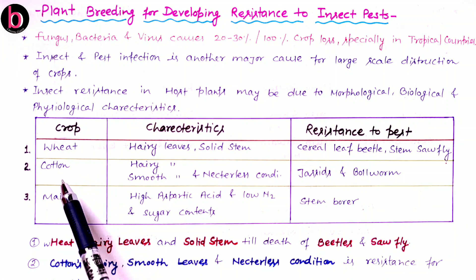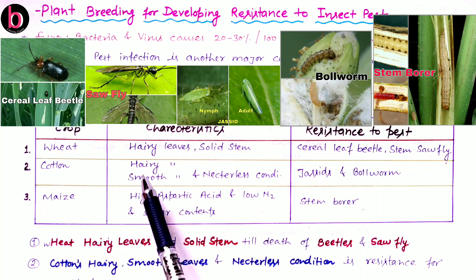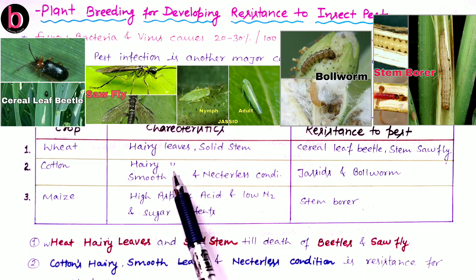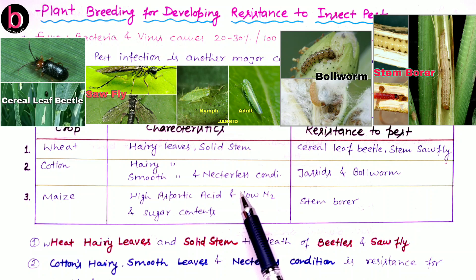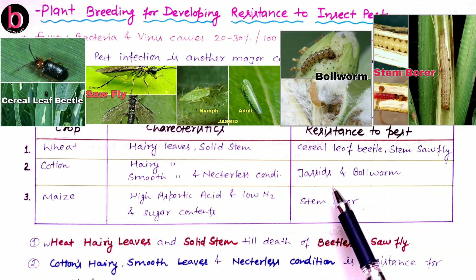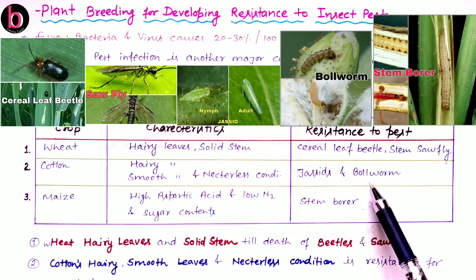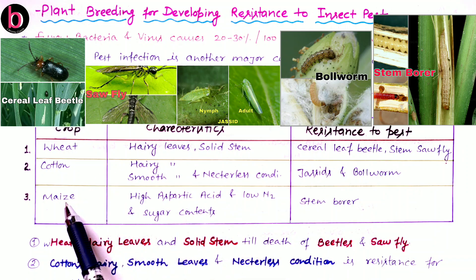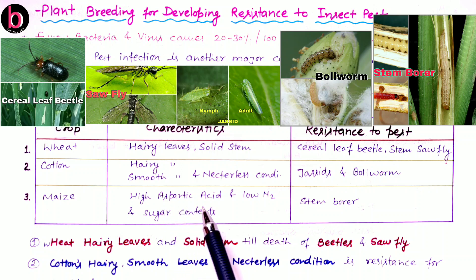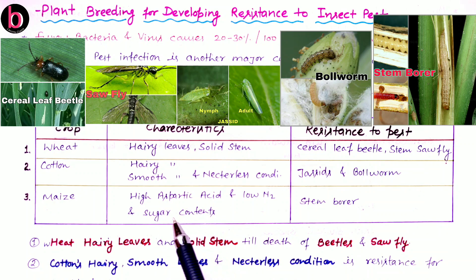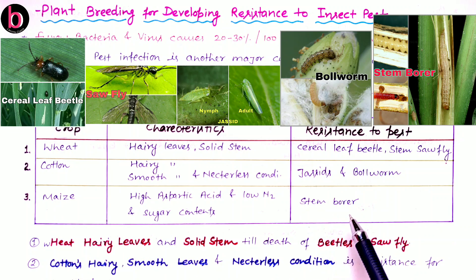The second is the cotton plant. A cotton plant with characteristics like hairy leaves, smooth leaves, and nectarless condition has resistance against jassids and bollworm. Third is the maize crop, carrying characteristics like high aspartic acid, low nitrogen, and low sugar content — such maize plants carry resistance against stem borer.